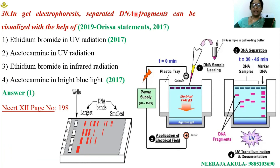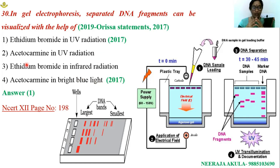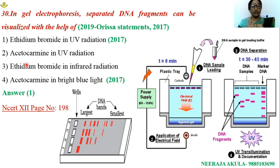Question number 30: in gel electrophoresis, separated DNA fragments can be visualized with the help of which option? Options given: ethidium bromide with UV radiation; acetocarmine with UV radiation; ethidium bromide with infrared radiation; acetocarmine with bright blue light. This is a question sliced from last year — a similar question appeared in 2017.